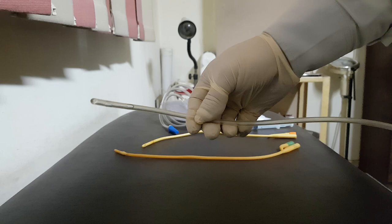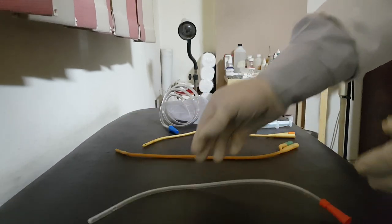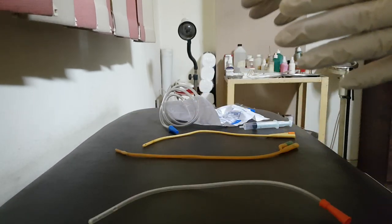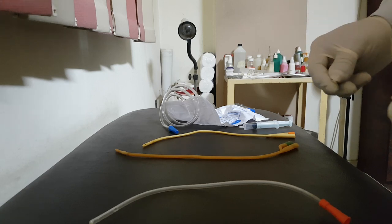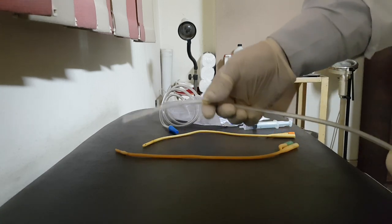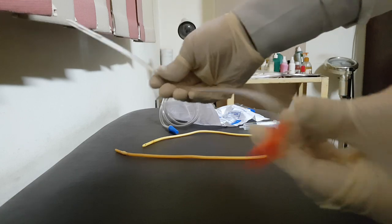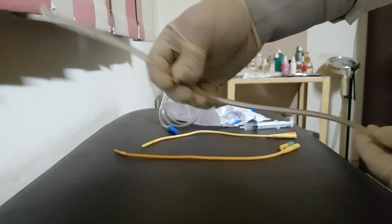So we have two types of catheters: intermittent catheter and indwelling catheter. One example of the intermittent catheter is this one, it's called Nelaton catheter.